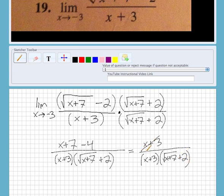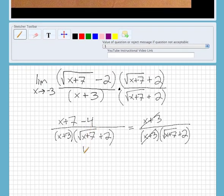So the x plus 3 cancels. And then we are left with 1 over square root of x plus 7 plus 2.